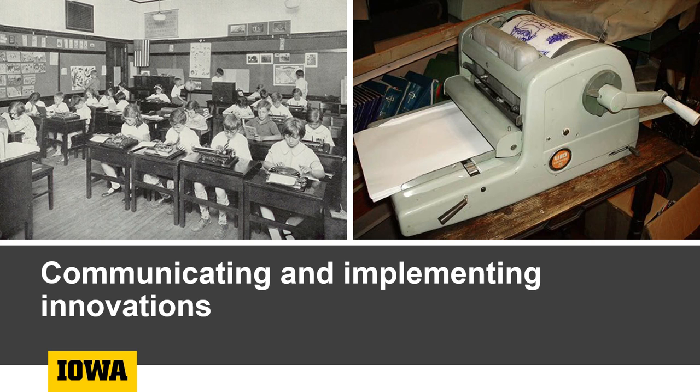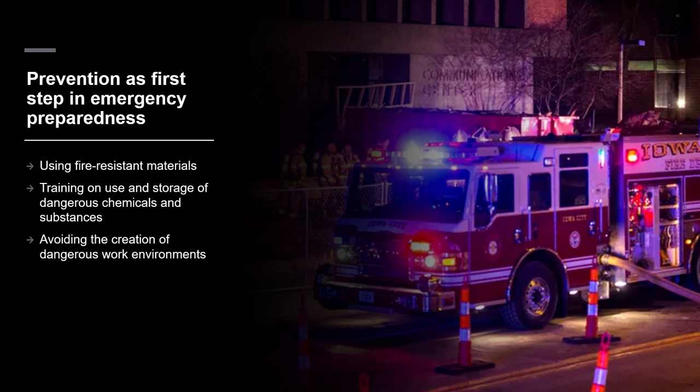The last component of this module is emergency preparedness, which has two major parts. The first is how you provide a safe operating environment and proactively seek to prevent emergencies. A fire, for example, would be a major emergency presenting numerous operational challenges. The picture shown here is from a fire on the University of Iowa campus in mid-2020 in the communications building. Fortunately, there were no injuries as the building was being demolished, but it highlights the first step in emergency preparedness: seeking to prevent emergencies through using fire-resistant materials in renovations, training staff and students on the proper use and storage of dangerous chemicals, and ensuring employees do not experience dangerous work environments.